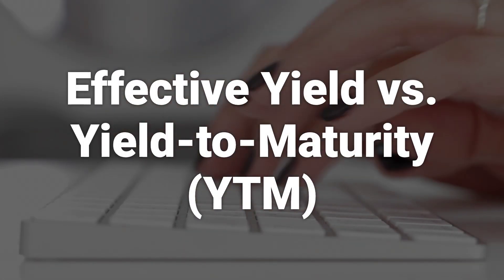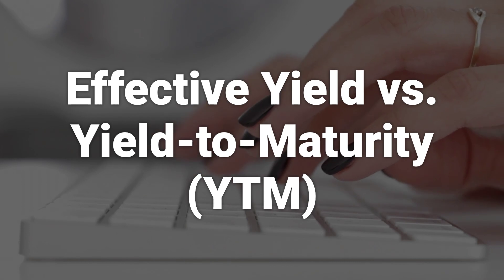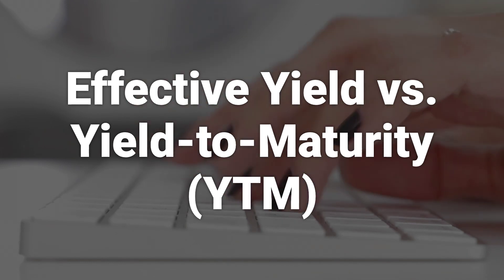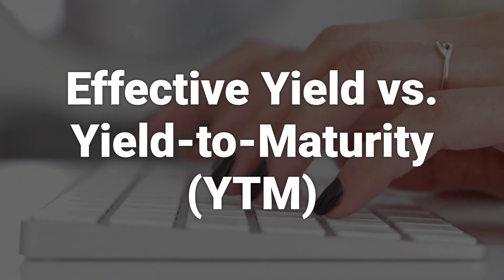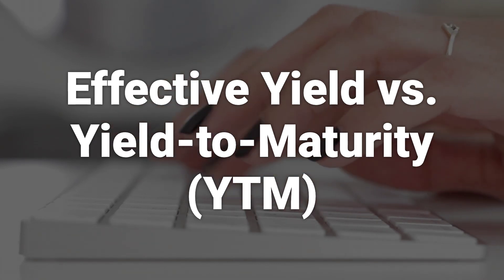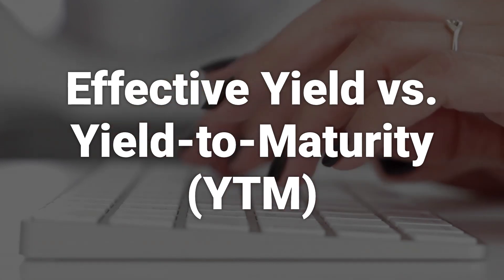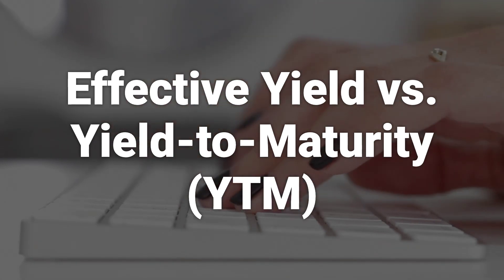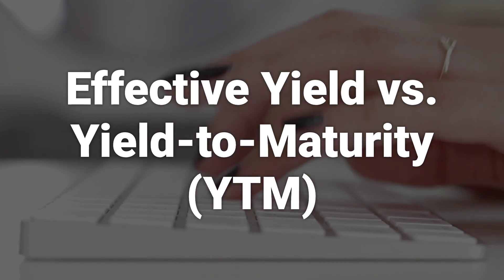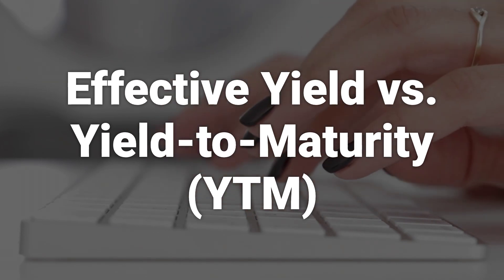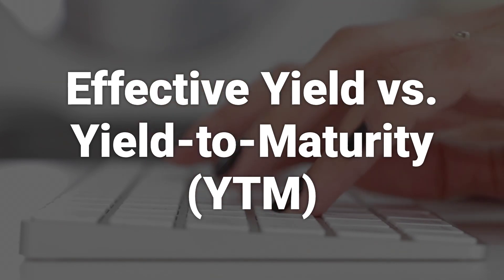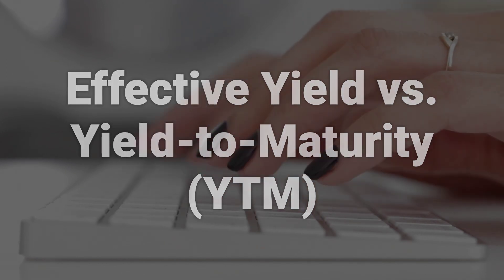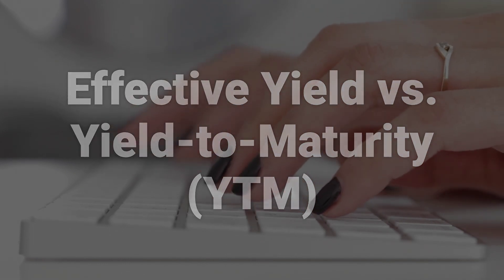The yield to maturity is the rate of return earned on a bond held until maturity. To compare the effective yield to YTM, the YTM must be converted to an effective annual yield. If YTM is greater than the effective yield, the bond is trading at a discount to par, and if YTM is less than the effective yield, the bond is selling at a premium.